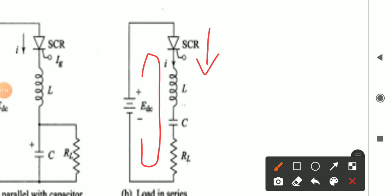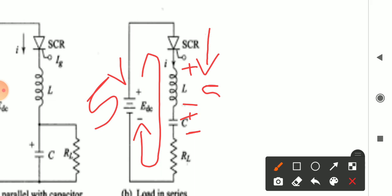As soon as anode current starts to flow, it completes the path through the inductor and capacitor. Since inductor and capacitor are energy-storing devices, they start to store energy — with plus polarity on one side and minus on the other for both components. The capacitor starts to accumulate charge on its plates and the inductor also stores energy. Up to the supply voltage — for example, 5 volts — they will continue to store energy until they reach that value.